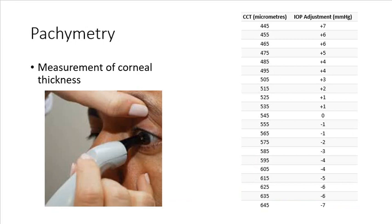Pachymetry is another important investigative technique for monitoring and detecting glaucoma. And pachymetry is just the measurement of corneal thickness. So normal corneal thickness is around 550, 555 microns.